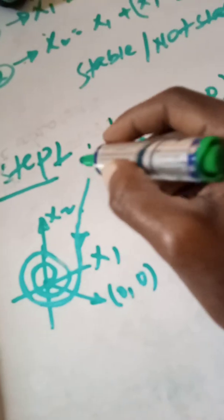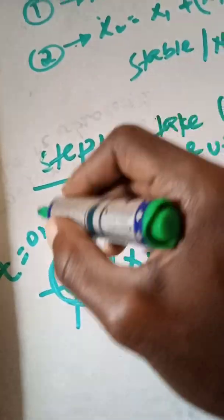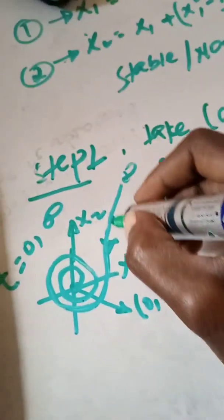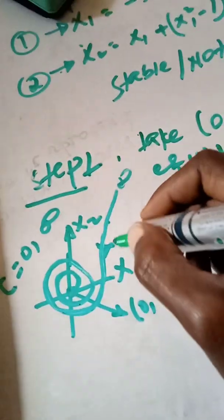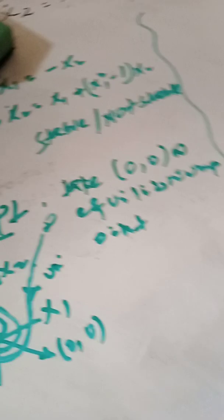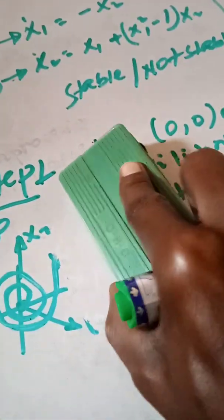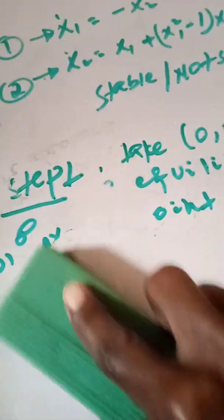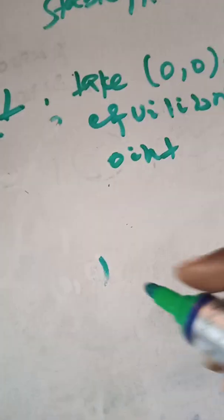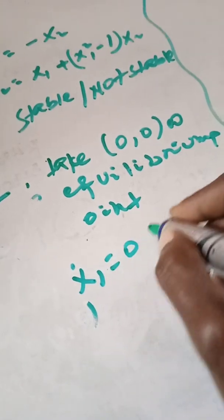If the system is unstable, the trajectory goes to infinity — meaning when t equals zero the system goes to infinity. For now, I will share the steps on how to check the stability of the system. In step one, at equilibrium, x1_dot equals zero and x2_dot equals zero.